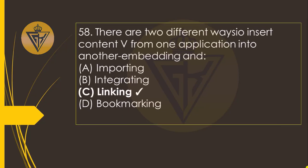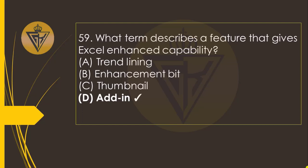There are two different ways to insert content from one application into another — embedded and the option C: Linked. Embedded and linking. What word term describes a feature that gives Excel enhanced capability? The option D: Add-In capability.